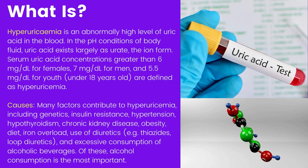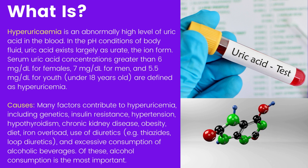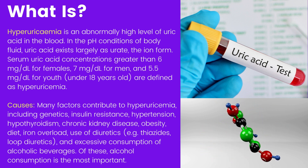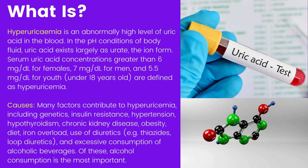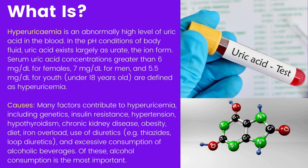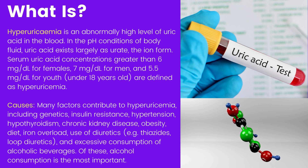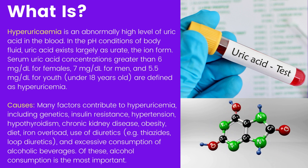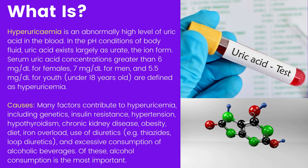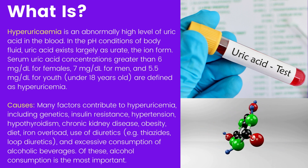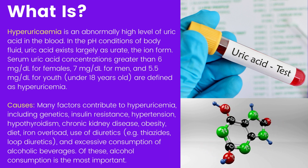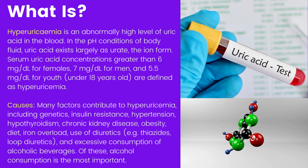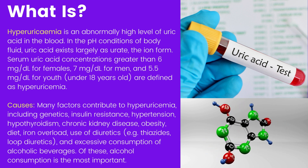Hyperuricemia is an abnormally high level of uric acid in the blood. In the pH conditions of body fluid, uric acid exists largely as urate, the ion form. Serum uric acid concentrations greater than 6 mg/dL for females, 7 mg/dL for men, and 5.5 mg/dL for youth under 18 years old are defined as hyperuricemia.